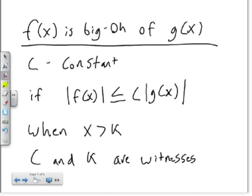The K value is when C times g(x) outgrows and continues to outgrow f(x) as x goes to infinity. The constant C and K are called witnesses to the Big O Notation.